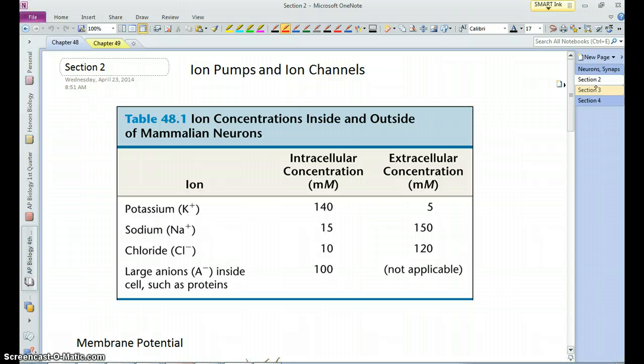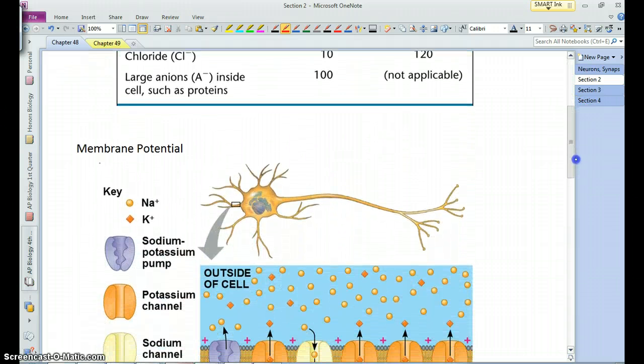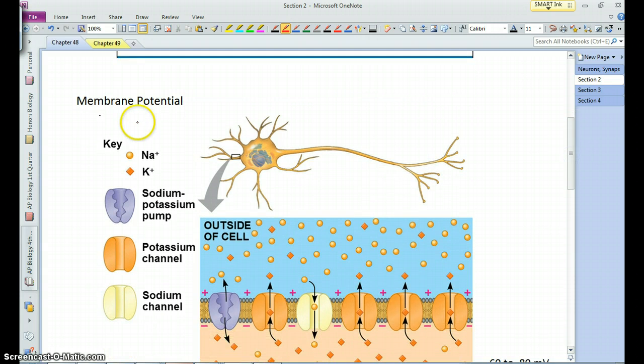Nerve impulses. We have to talk about ion pumps, ion channels, and the ions. So in a typical mammalian neuron, you have a certain concentration of these different ions, potassium, sodium, chloride, and some anions. And you notice it's different than what the situation is outside the cell. So you have more potassium inside and a lot less outside and less sodium in and more on the outside. And when you have differences in anions and cations inside and outside the cell, you essentially get a difference in charge across the membrane, or what's called a membrane potential.